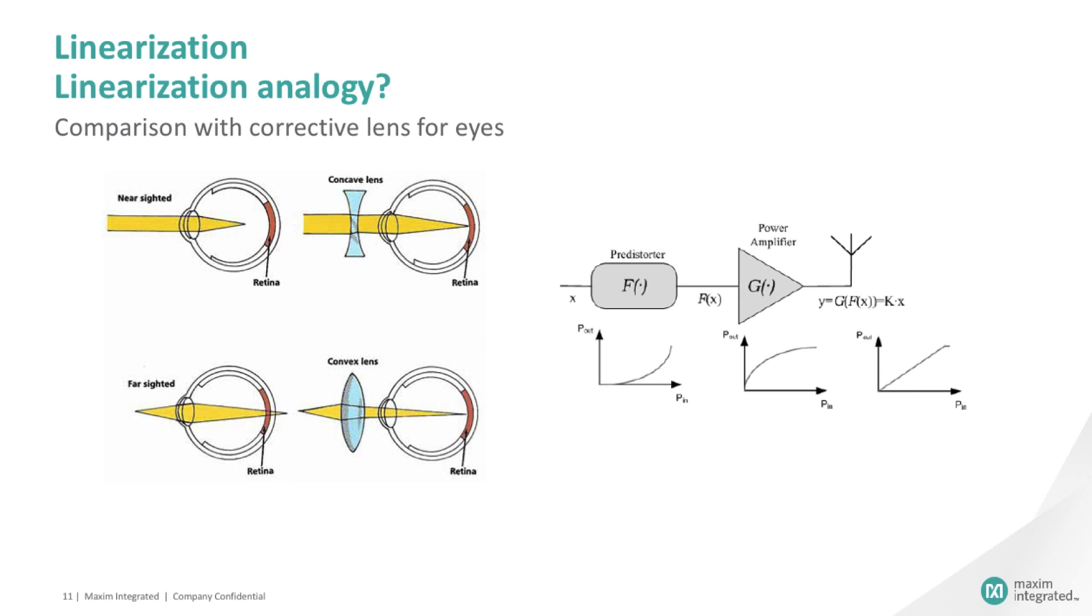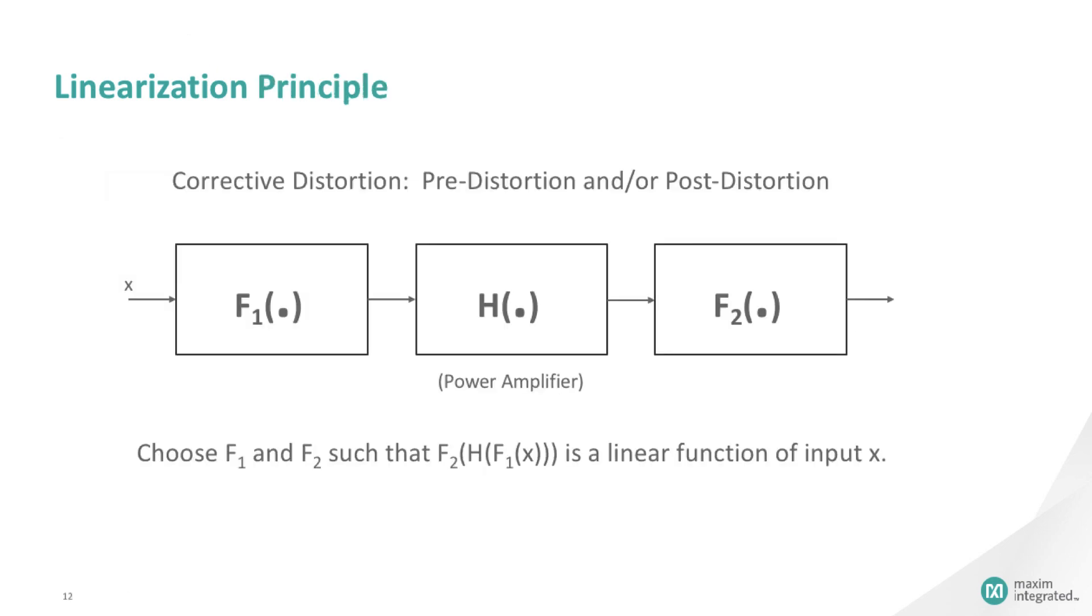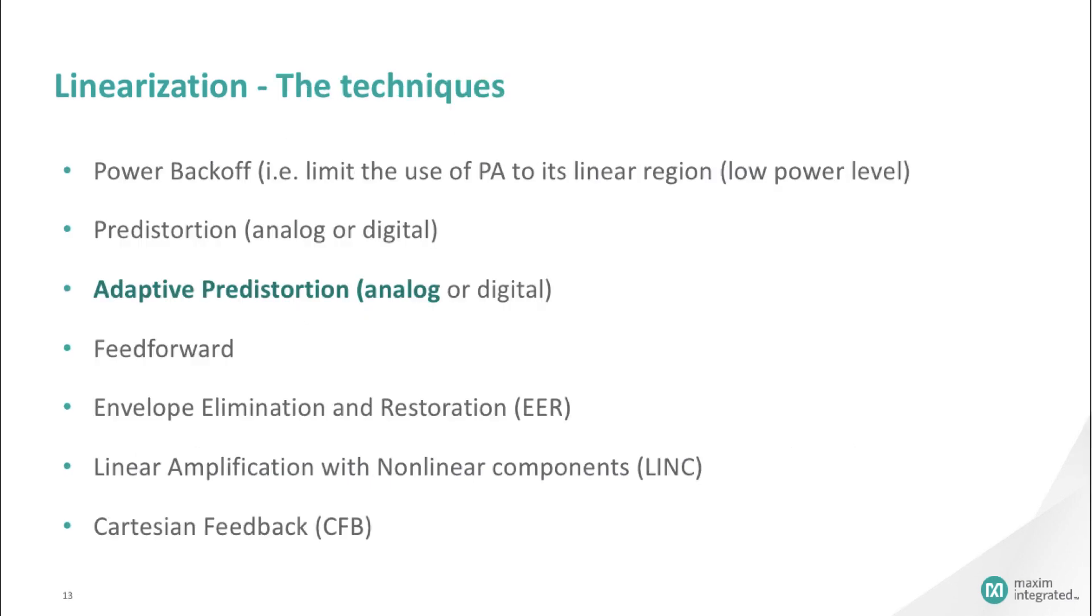The terms used are pre-distortion or post-distortion. One can also make the correction at the baseband level, sometimes called digital pre-distortion, or at the RF level, called RF PAL, which stands for RF Power Amp Linearizer. Linearization adds elements or functions in the signal path that compensate the nonlinearities of the element to linearize it. Many techniques exist to achieve linearization.